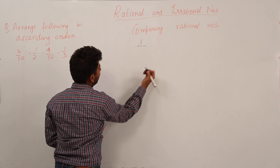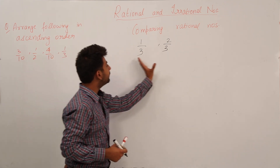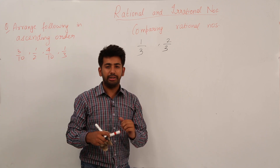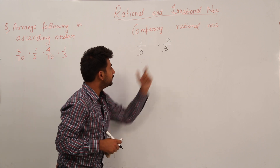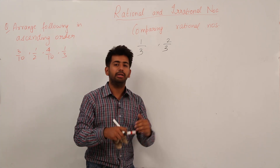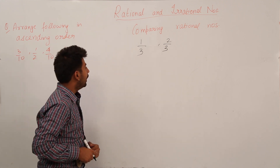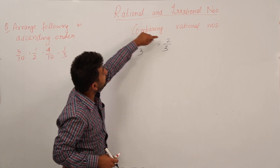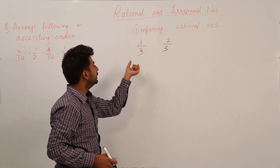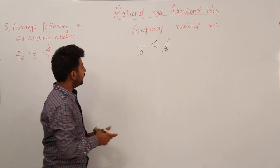If I have two rational numbers, let us say 1/3 and 2/3, and I have to find out which one is greater — the process is very simple because the denominator in both rational numbers is equal. Whenever the denominator is equal, you can easily compare the numerators, and whichever numerator is greater, that rational number is greater. Here, 2 is greater than 1, so 2/3 is greater than 1/3.